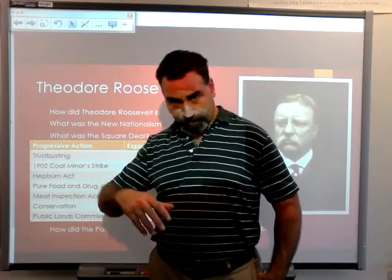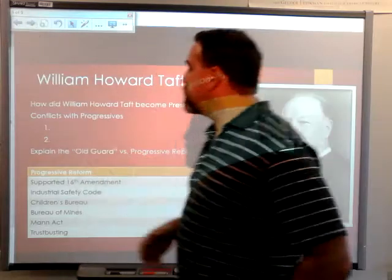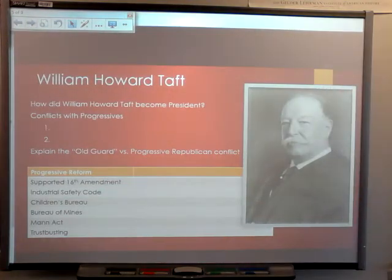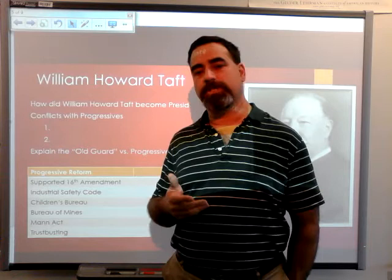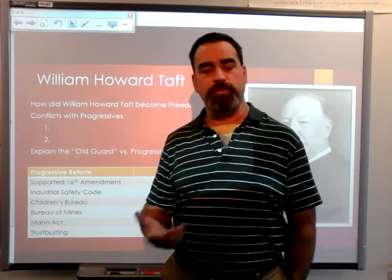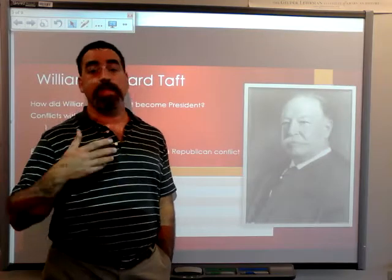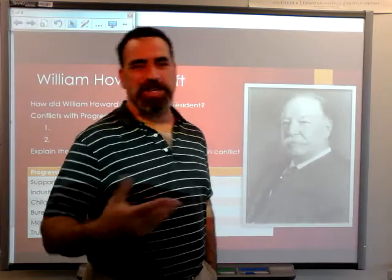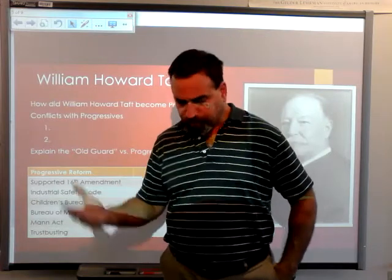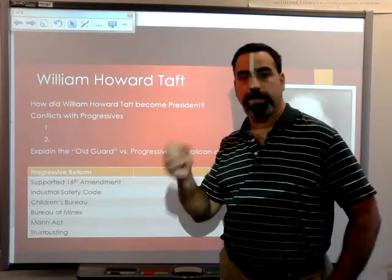In 1908, Roosevelt decided not to run for office again — he was going to go to Africa and kill some animals. He found his Secretary of War, a fellow by the name of William Howard Taft, and decided Taft was his man to take over and continue progressive reforms. Roosevelt gave Taft his backing; Taft ran against William Jennings Bryan and won in 1908. Taft had relatively little political experience — he had been a judge and secretary of war — and what got him elected was largely Roosevelt's backing.